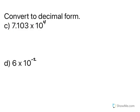Okay, let's do two more. Convert to decimal form 7.103 times 10 to the fourth. And then we have 6 times 10 to the negative 2. So if you are a visual person like me, start with that front number and say, okay, my exponent is four.